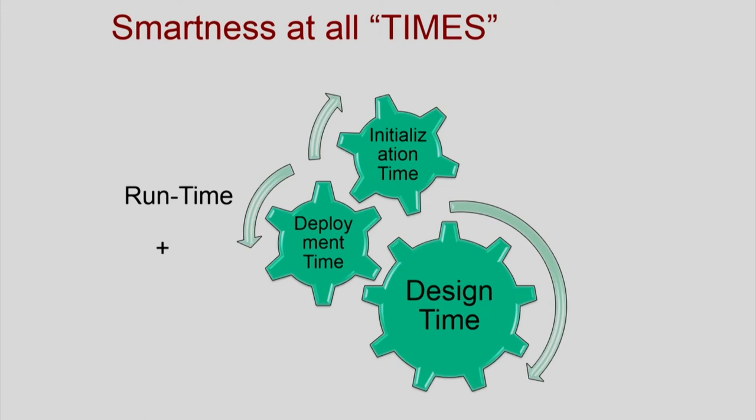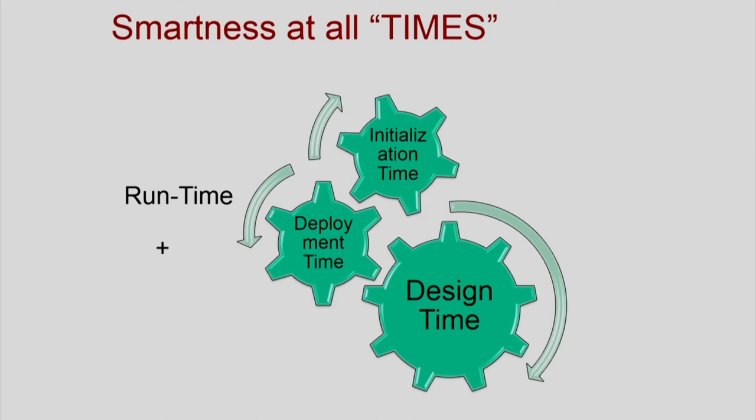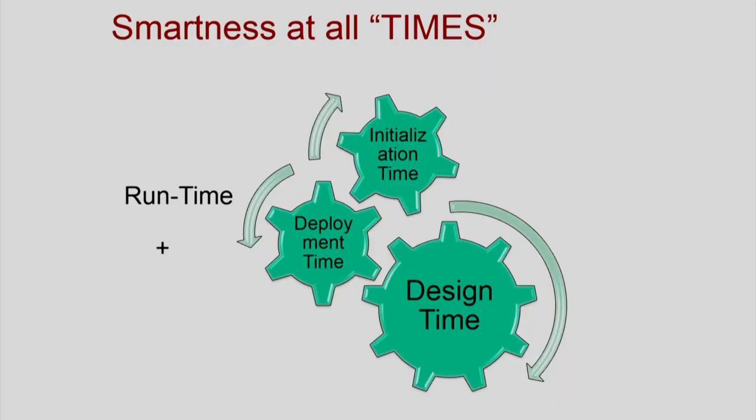Build smartness into the whole auditorium not only during run time — when you are using it for a performance or an event — but also during initialization time. For example, in the morning you might set the temperature to a certain value depending on what events are happening that day. Or at deployment time, when the space is envisaged as an auditorium, you make decisions about where to position the vents for airflow. Or at design time, asking how this whole area should be designed to be usable as an auditorium. Smartness applies to all of these stages: design, deployment, initialization, and run time.